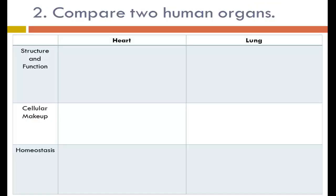The next question asks us to select two human organs that are part of the human body system, analyze their structure and function, explain how they differ in cellular makeup, and how these organs help to maintain homeostasis. A heart in a human has four chambers that are separated by valves. This helps to prevent the mixing of oxygen-rich and oxygen-poor blood, making the organ function more efficiently.